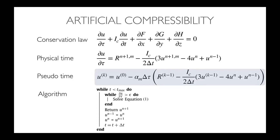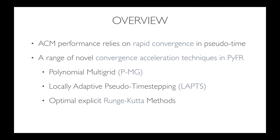The pseudo-time problem, highlighted in blue, is advanced using an explicit Runge-Kutta method — you're running it forward in pseudo-time until it stops changing. In the algorithm, for every outer loop physical time step, we solve while the norm of partial u partial tau is greater than epsilon. Ultimately, the performance of the incompressible solver in PIFR using ACM relies on rapid convergence of this pseudo-time problem — you're spending 99% of your work there. This leads us to the three convergence acceleration techniques, starting with polynomial multigrid.